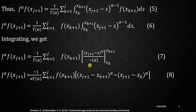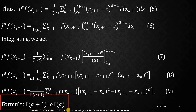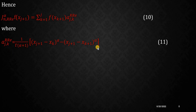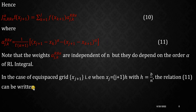After that, simple simplification using the fundamental rule of calculus gives you equation number 8, and some more simplifications yield equation number 9, where you can see that I have used one of the properties of the gamma function. After that, I have tried to write equation 9 in terms of equations number 10 and 11, wherein in equation number 10, a_{jk} is known as the weight in the formula. These weights are independent of n but do depend on the order alpha of the fractional integral.